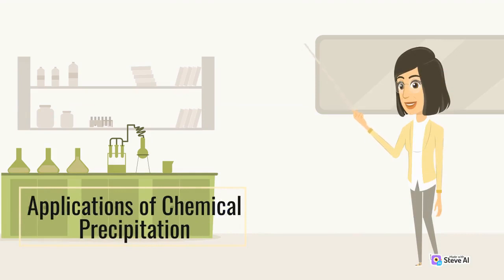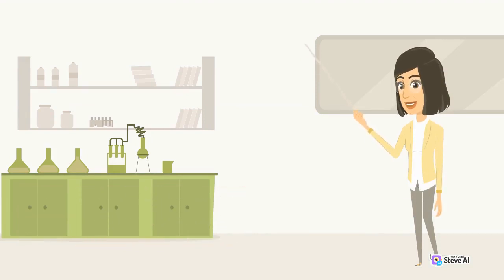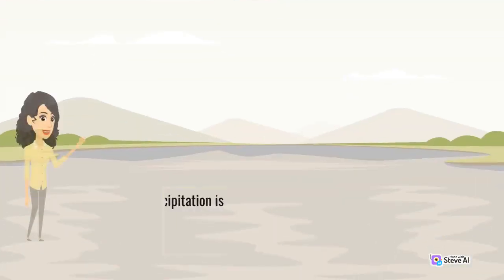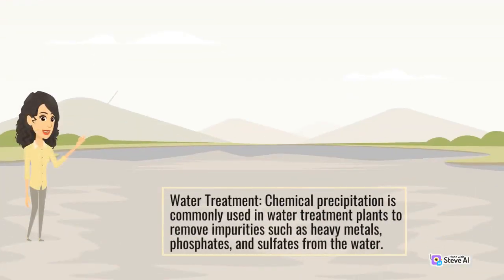Applications of chemical precipitation: Chemical precipitation has a wide range of applications, including water treatment. Chemical precipitation is commonly used in water treatment plants to remove impurities such as heavy metals, phosphates, and sulfates from the water.